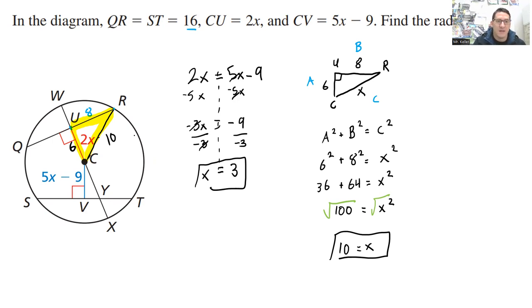Again, to do that, use the fact that these things are congruent. 2x is equal to 5x minus 9. Solve for x. Put that x back into here, into the 2x. So I'll write that out. UC is equal to 2x. And I know x is found to be 3. So UC is 6. So just it's all in there. And then once you have that, you can use the fact. You know all these parts. You can use the Pythagorean theorem.